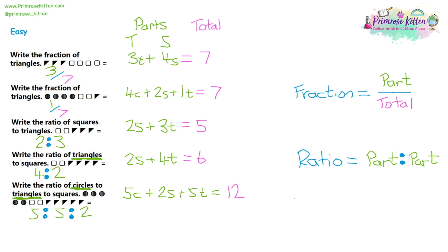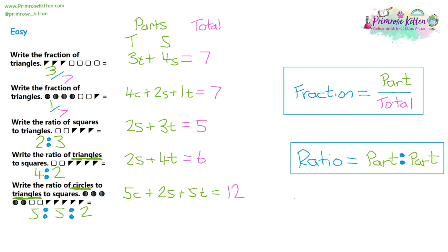It's all about looking at what you've been asked to find. For a fraction, it's one part over the total. For a ratio, it's the parts in the order they appear in the question — we're not bothered about the total. The parts of a ratio should add up to the total, so you can work it out if needed. Similarly with fractions, you can find the missing fraction by subtracting from the total.